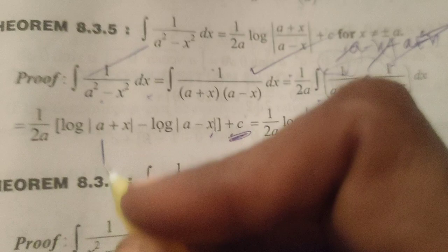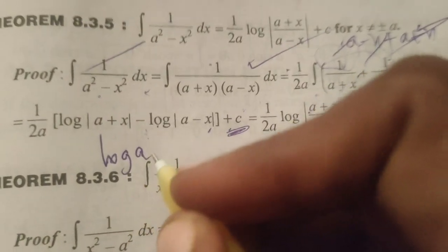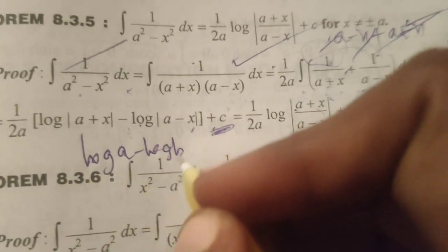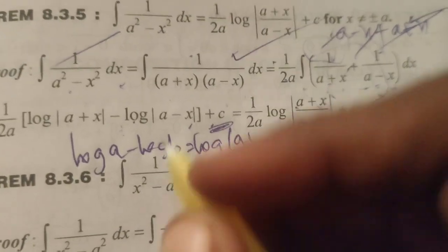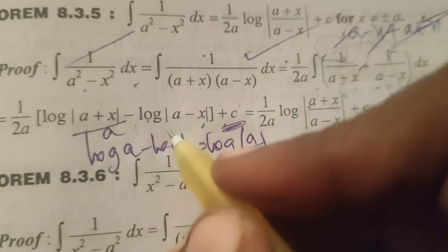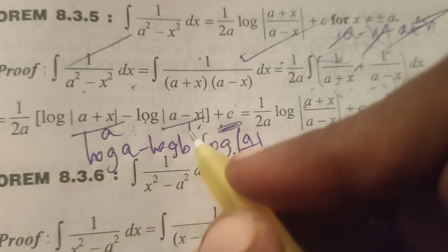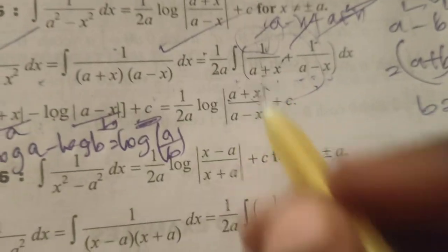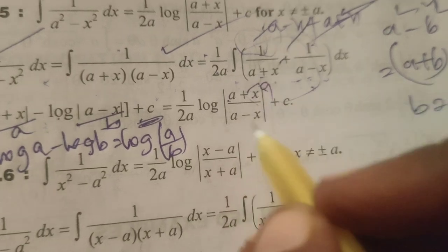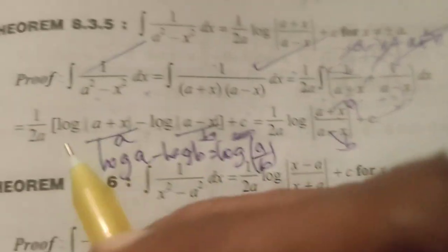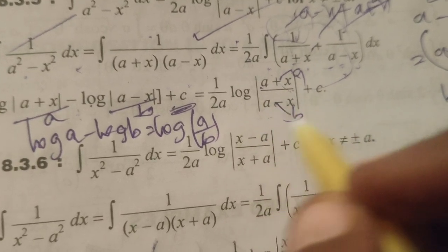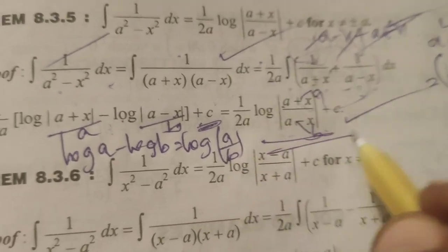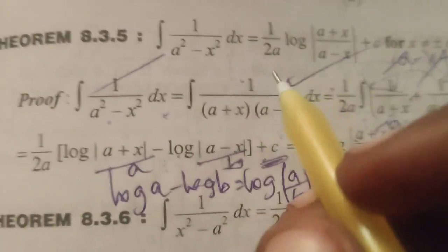Therefore 1 by 2a. We know the formula log a minus log b equals to log of a by b. Using the same formula, here a plus x means a is there, a minus x means b is there. Therefore log of a by b. This is a and this is b. 1 by 2a log of a by b. Applying the formula, a plus x by a minus x plus c. This is the result.